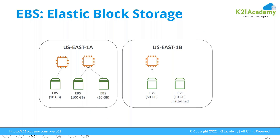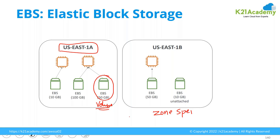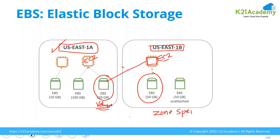The Elastic Block Storage service is actually a zone-specific service. What does zone-specific mean? If you create an Elastic Block Store volume — a volume is nothing but a logical storage block — in Availability Zone US East 1A, that volume can only be attached to EC2 instances created in the same availability zone. If you create a volume in US East 1B, it can only be attached to an EC2 instance launched in US East 1B. You cannot do a cross-connection. This is not possible because Elastic Block Storage is an availability zone-specific service.